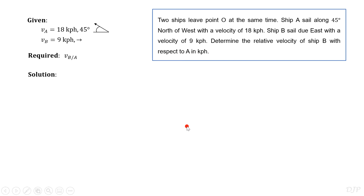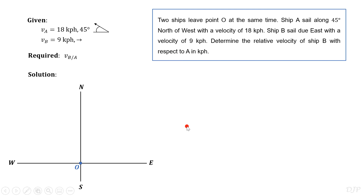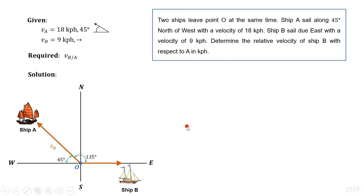Let's start our solution by drawing the situation in the problem and focusing first on the displacement that each body can create. At any given time, starting from point O, ship A will have a displacement S sub A, while ship B will have a displacement S sub B.